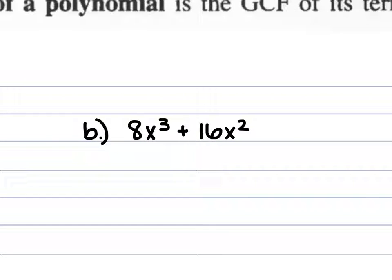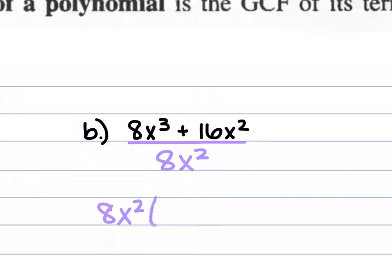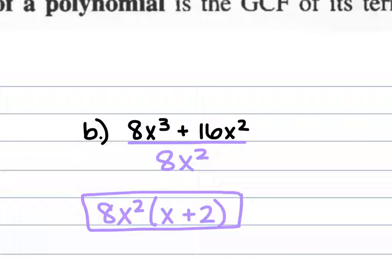For b, we have 8x³ plus 16x². Their greatest common factor is 8x². That comes out front. 8x³ divided by 8x² is x, and 16x² divided by 8x² is 2. So we have 8x² times (x plus 2).